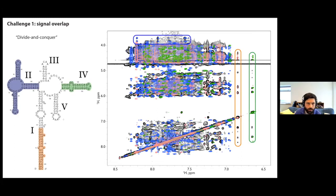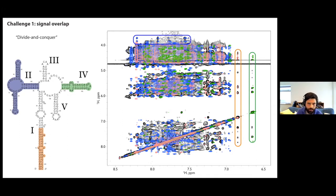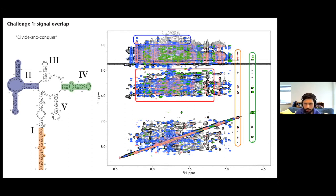The lack of long-range interactions between structured elements can be beneficial here because it means a divide-and-conquer approach can be successful. So if we generate smaller fragments based on the predicted secondary structure and compare their spectra to the spectrum from the full-length molecule, it's apparent that at least partially we have good matches for at least some residues. If the chemical shifts and NOE patterns match from the fragment to the full-length molecule, we take that as evidence that the structure is the same. But for this approach we are really limited to a few outlying signals — the bulk of the spectrum, particularly the ribose signals, is far too overlapped for any meaningful comparison.